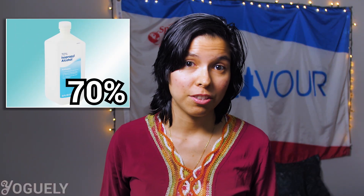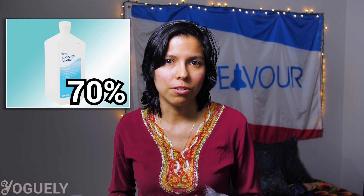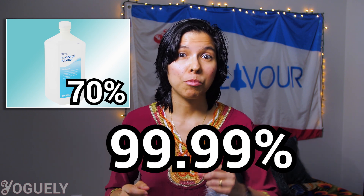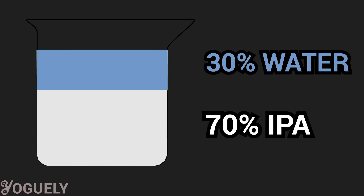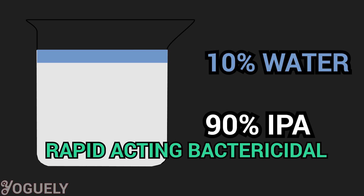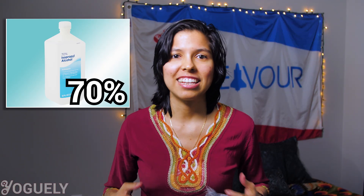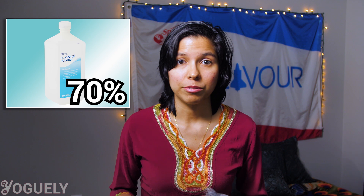Is 70% isopropyl alcohol a disinfectant? 70% isopropyl alcohol is effective in killing 99.99% of germs. Specifically, isopropyl alcohol diluted with 30% to 10% purified water is a rapid-acting bactericidal, meaning it's capable of killing bacteria. It is also tuberculocidal, fungicidal, and virocidal. Unfortunately though, it does not destroy bacterial spores.